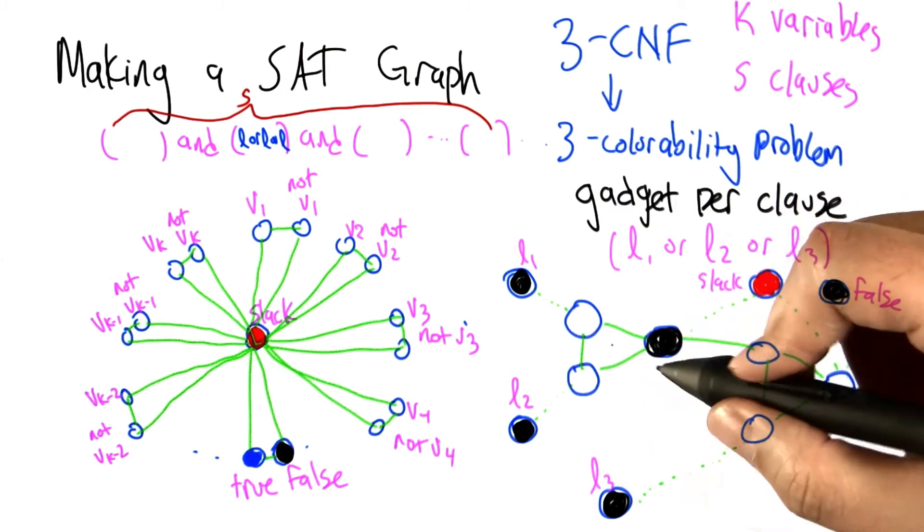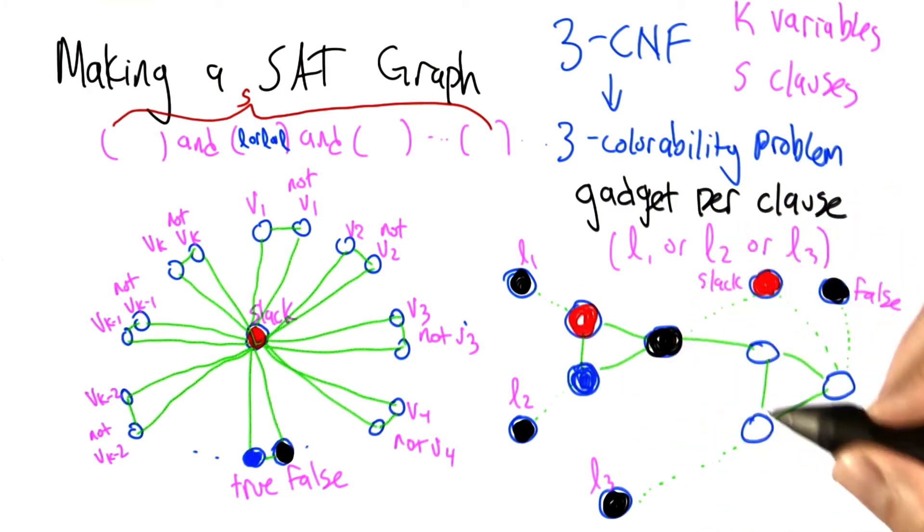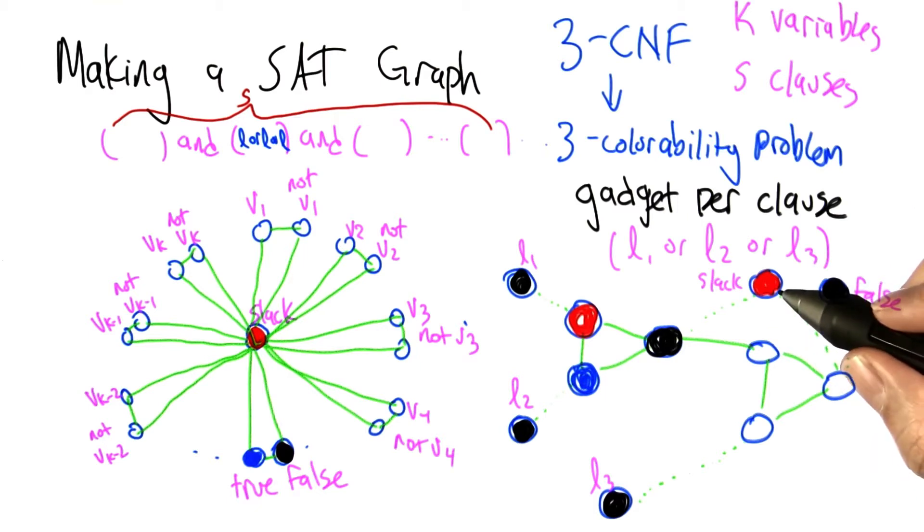These can either be blue or red, it doesn't matter which is which. So now we have this node. Oh, well, this node is kind of obvious. It's connected to red and black, so it has to be blue.